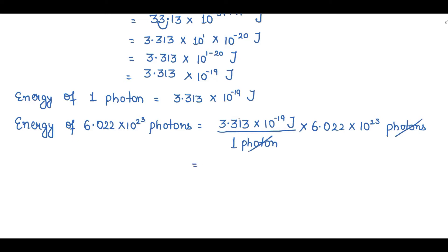Multiplying: 3.313 × 6.022 = 19.951. These powers are in multiplication so we add them: 10⁻¹⁹ ⁺ ²³ = 10⁴. So we have 19.951 × 10⁴ joule. Now we want to convert this value to kilojoules.